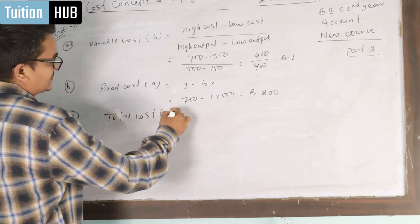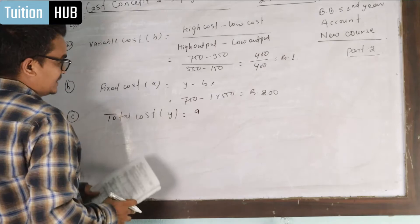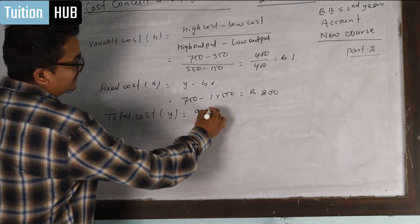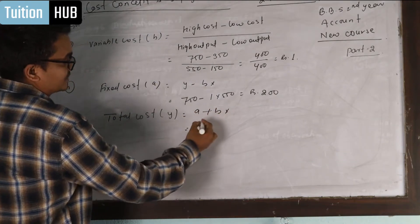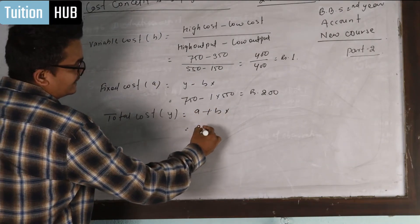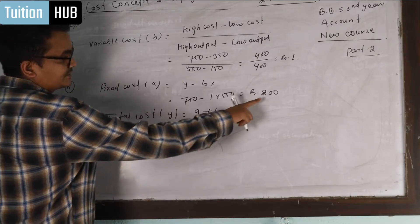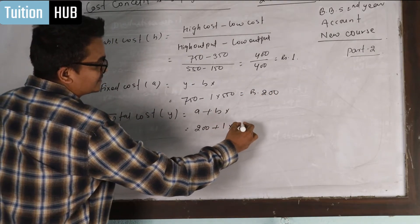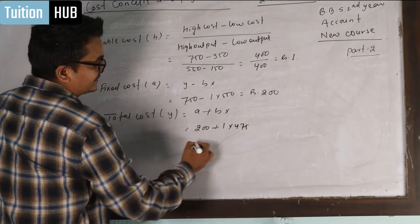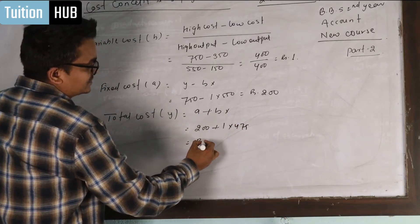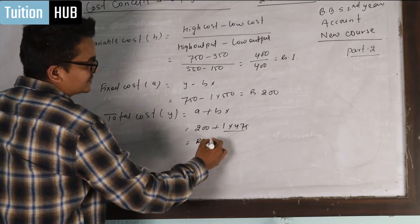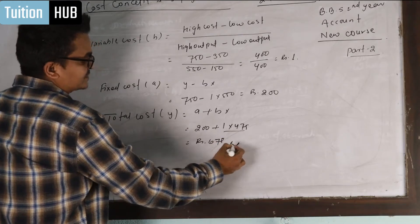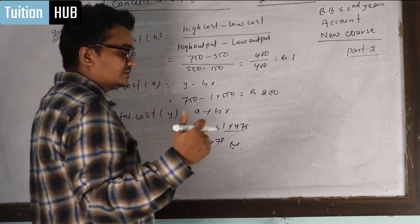Total cost is equal to a plus bx. The equation is equal to a. So a is equal to 200, b is equal to 1, and x is equal to 475. So multiply 675. That is the answer.